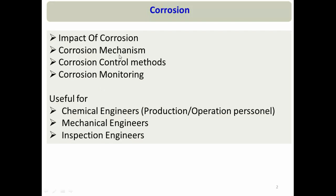For inspection engineers, understanding corrosion is imperative. Their job is to monitor corrosion, and if a material is going to failure, they must give recommendations to eliminate that failure. The success of that recommendation greatly depends on correctly determining the failure mechanism — if determined incorrectly, the failure rate might actually increase.